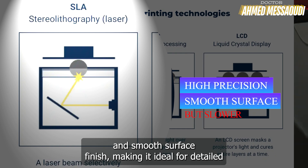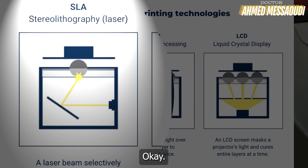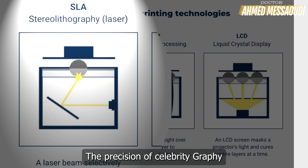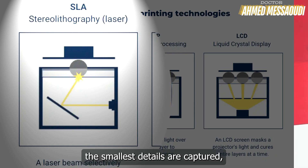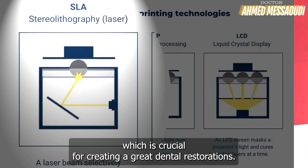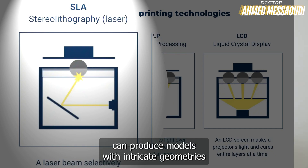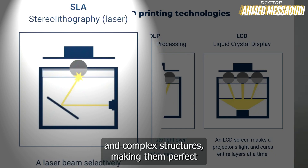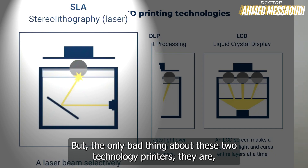SLA, or stereolithography, uses a laser to cure liquid resin into solid parts. It's known for its high precision and smooth surface finish, making it ideal for detailed dental models like crowns, bridges, and orthodontic appliances. The precision ensures even the smallest details are captured, and SLA printers can produce models with intricate geometries and complex structures — perfect for applications requiring high accuracy. The downside is that SLA printers take more time to complete prints.